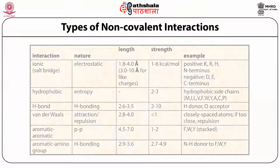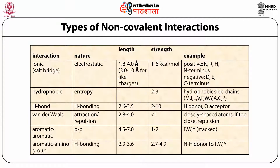The different types of non-covalent interactions include ionic interactions governed by electrostatic forces, existing at 1.8-2.4 Å (generally 3-10 Å for like charges), with energy of 1.6 kcal/mol. Residues involved include positively charged lysine, arginine, histidine, and negatively charged aspartic acid and glutamic acid. Hydrophobic interactions are entropic in nature with strength of 2-3 kcal/mol, involving methionine, isoleucine, leucine, valine, phenylalanine, tryptophan, tyrosine, alanine, cysteine, and proline.